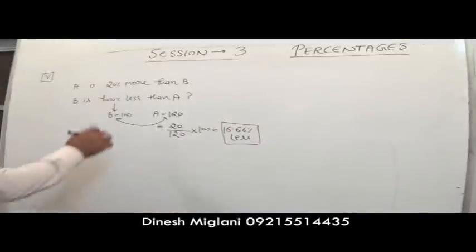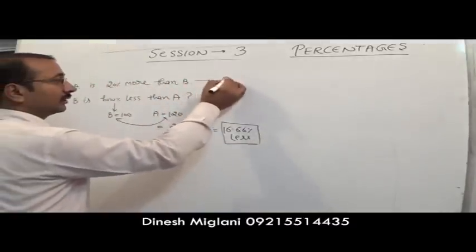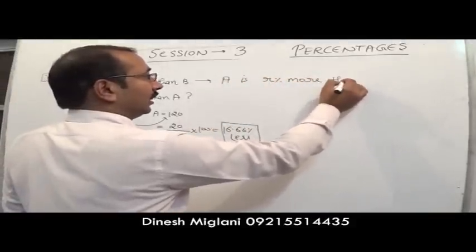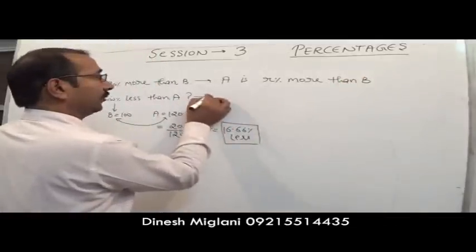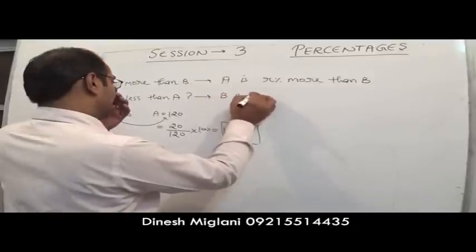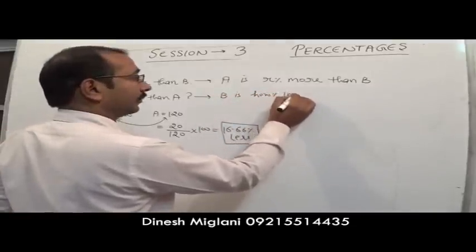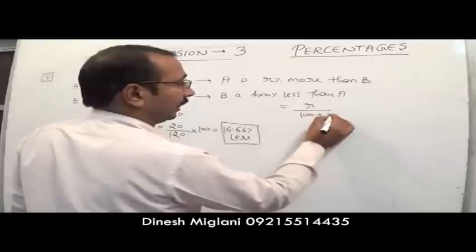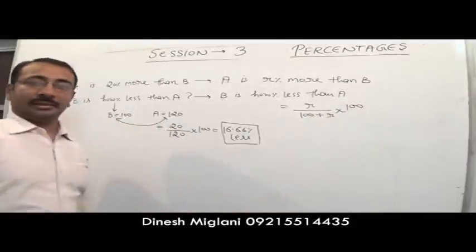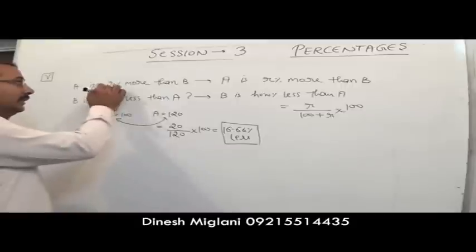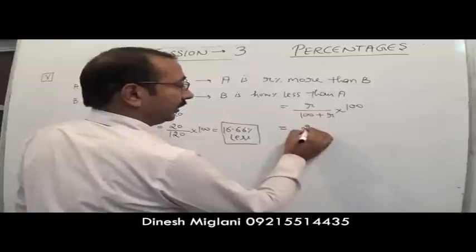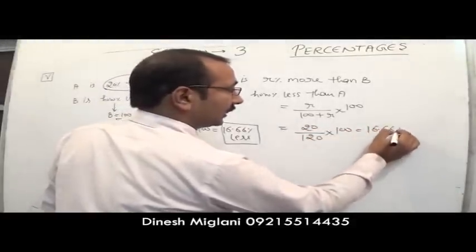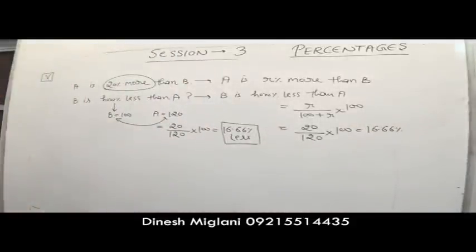There is a standard formula: if A is R% more than B, then B is less than A by R/(100 + R) × 100. With R = 20: 20/120 × 100 = 16.66%.